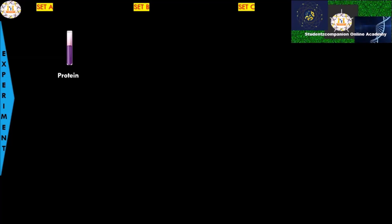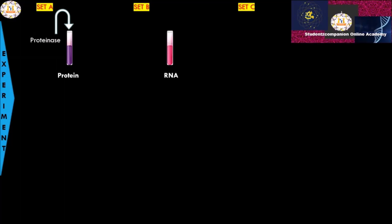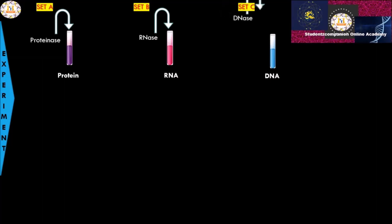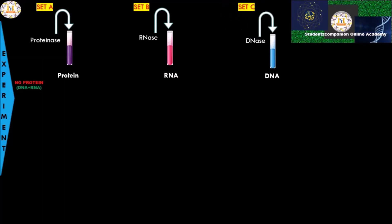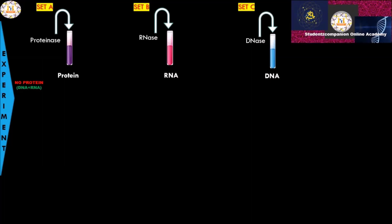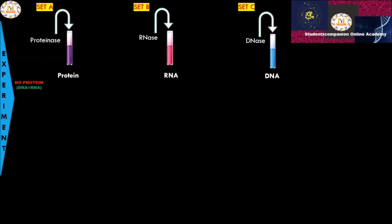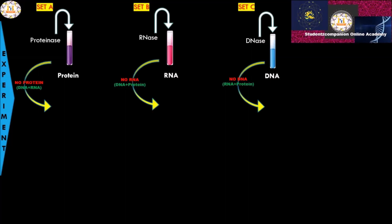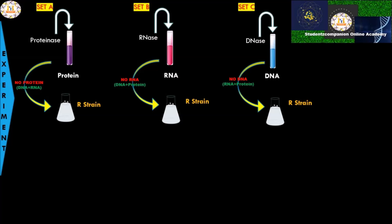There were three sets in this experiment. In the first set, the scientists digested the protein with the enzyme protease, RNA with the enzyme RNase, and DNA with the enzyme DNase. Following that, the first set — which was originally containing protein — no longer contained any protein because of the enzyme digestion. Similarly, in the second set there was no RNA, and in the third set there was no DNA. This mixture was then incorporated into cultured R strain.